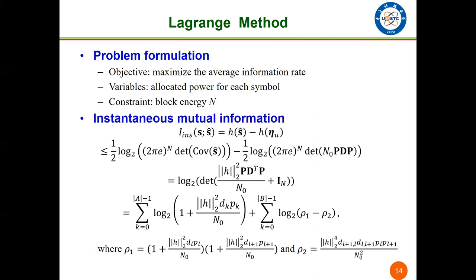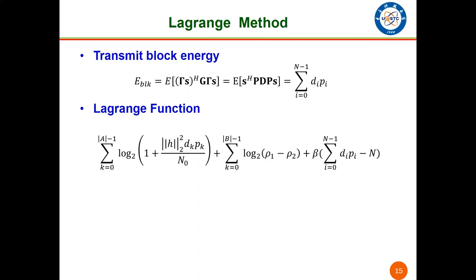Here is the problem formulation. Our objective is to maximize the average information rate. The variables are the allocated power for each symbol. The constraint is the block energy N. The instantaneous mutual information of S and S-hat can be represented as two parts.